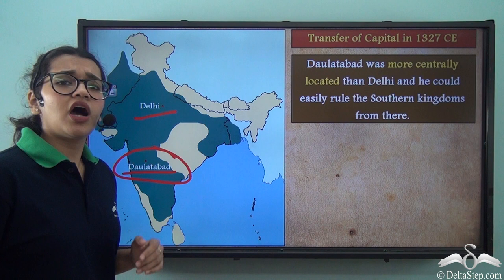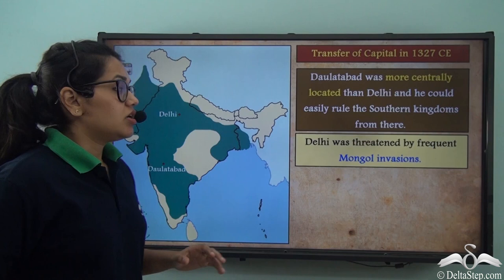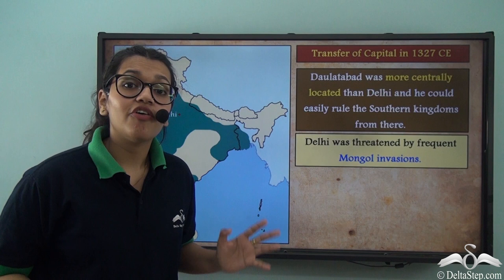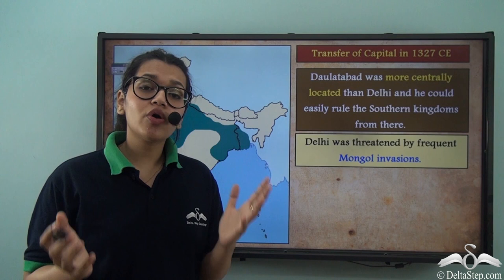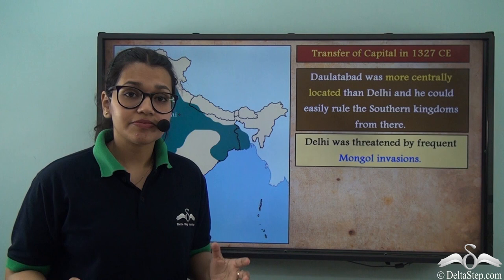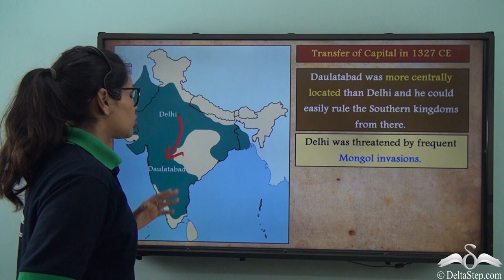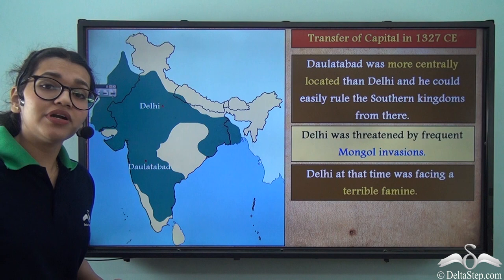Was shifting the capital a good idea? At that point in time, Delhi was threatened by frequent Mongol invasions from the northern frontiers. So Muhammad bin Tughlaq decided to move his capital from Delhi to Daulatabad so that his subjects could feel safe. Additionally, Delhi was facing a terrible famine, which made his decision to shift the capital final.